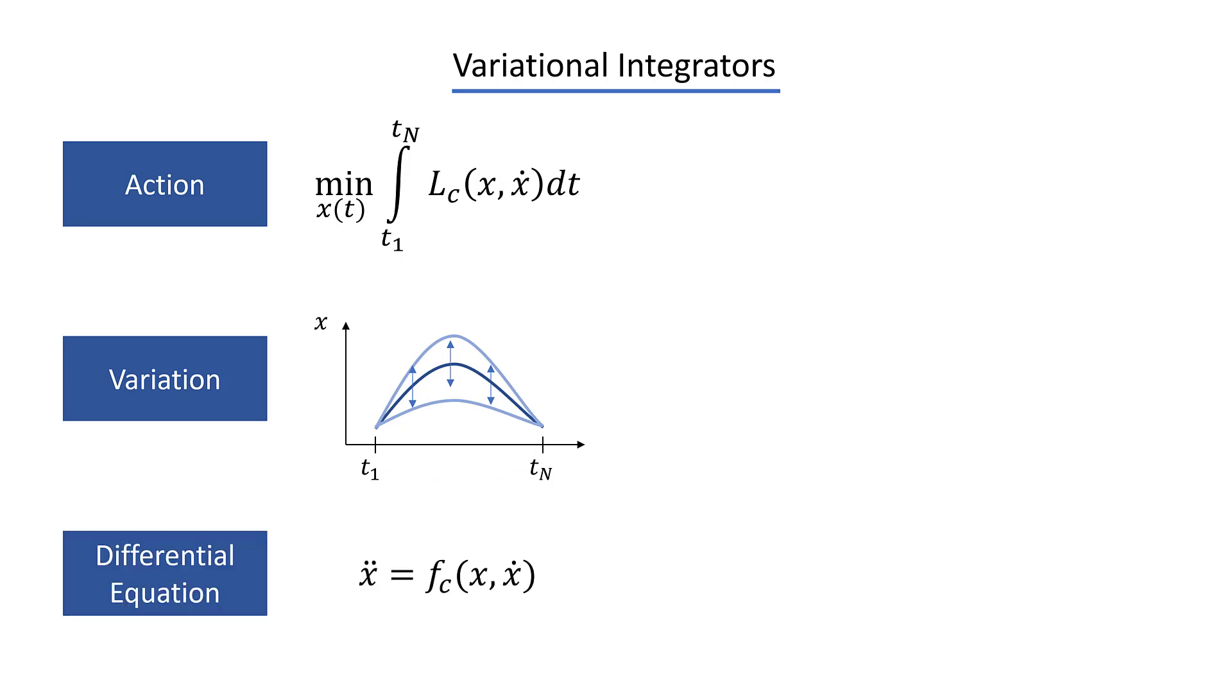If you do this correctly, this simply gives you the equations of motion of your system and to put it on a computer, you could use a standard numerical method, for example, a Runge-Kutta method. But if we do it this way, we do not necessarily maintain important properties of our system, for example, energy conservation or constraint satisfaction.